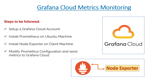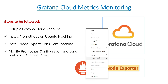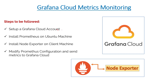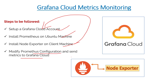You've already seen how to ship metrics from your Prometheus or your Kubernetes monitoring to Grafana. Today we are going to understand how to first create a Grafana Cloud account, then install Prometheus on a local machine, install Node Exporter, and then send these metrics to Grafana Cloud. We'll modify the Prometheus configuration to send metrics to Grafana Cloud. Let's get started.